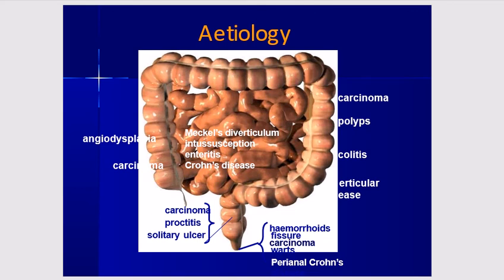Causes of lower GI bleed include, starting from common causes: hemorrhoids, fissure, carcinoma, warts, diverticular disease, colitis, ulcerative colitis, polyps, carcinoma, and angiodysplasia. On the right side of the colon: carcinoma, Meckel's diverticulum, intussusception, enteritis, and Crohn's disease. Small bowel lesions may also be responsible.